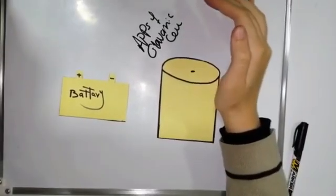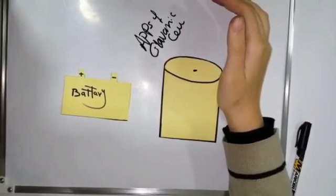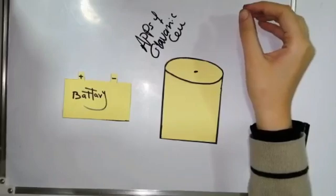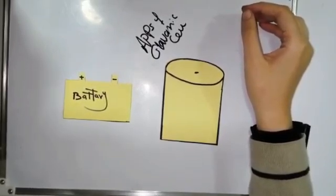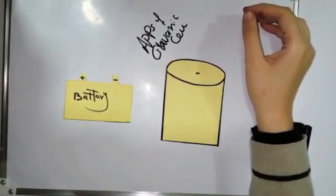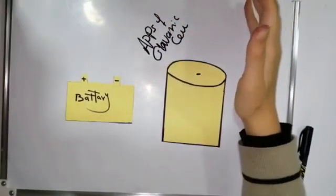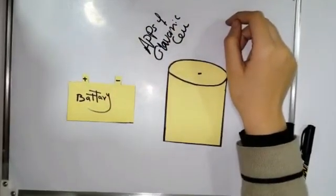Galvanic cell has many applications in our life. Specifically, we will talk about battery. Battery is very important in our daily life. You use battery in your telephone, in your flash, in your car, many things in your life. Batteries containing chemicals that react together in redox reactions to create electricity.